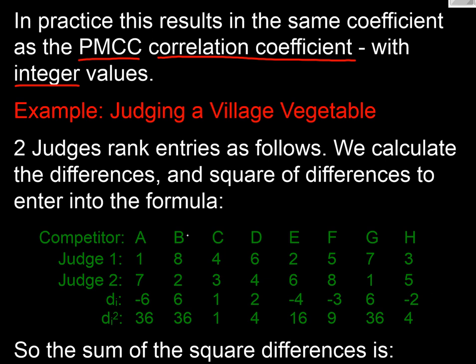So here's all their rankings. Judge one's rankings and here's judge two's ranking. So judge one ranked A first, judge two ranked A seventh, so the difference between those two, taking the first take away the second, is minus six. And if we then square it to get our sum squared, we get 36.